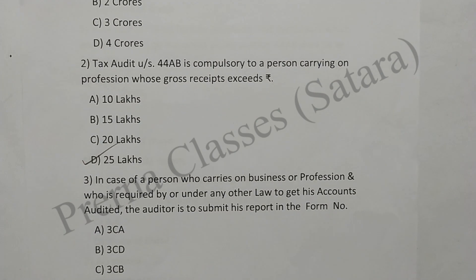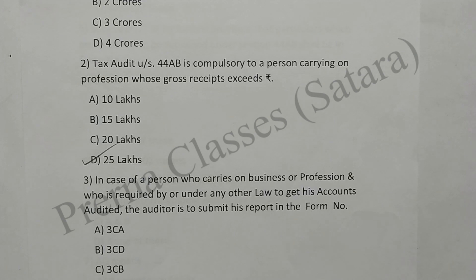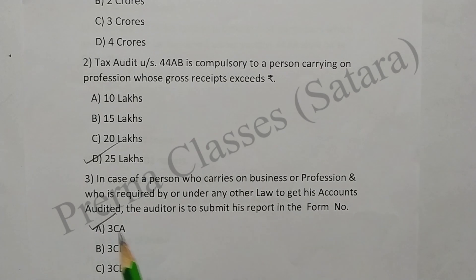Question 3: In case of a person who carries on business or profession and is required under any other law to get his accounts audited, the auditor is to submit his report in form number 3CA. Option A is correct.